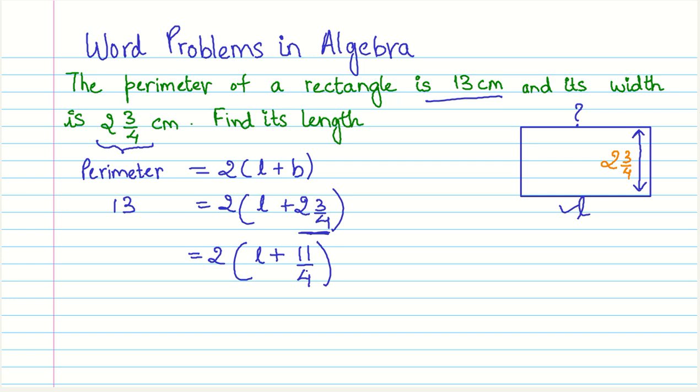Now, if you recollect, this is a fraction that has a numerator which is bigger than the denominator. And therefore, it is an improper fraction. And what we have essentially done is converted this mixed fraction into a proper fractional form. That is what we have done just to simplify our calculations.